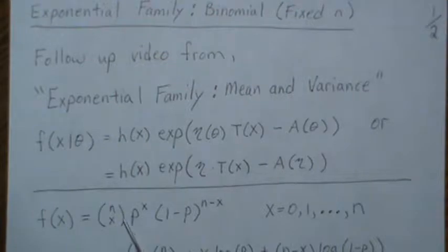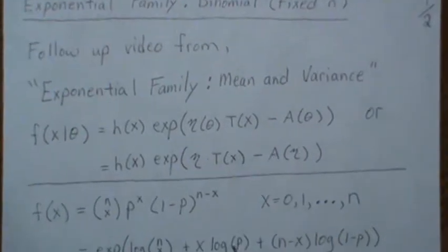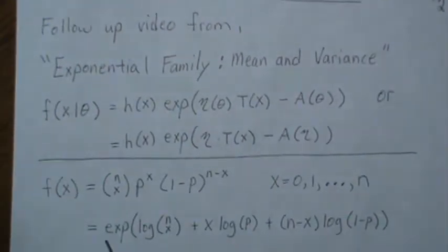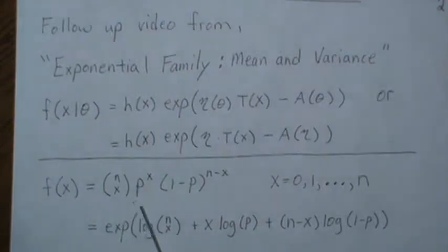Now we want to start transforming this to make it look like one of these distributions. So we take the e and the log of everything, and we get this piece here. Then the log of the multiplication is the sum of the logs.